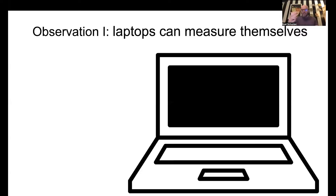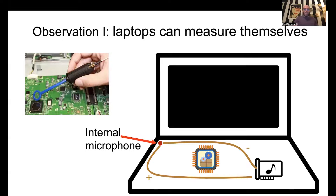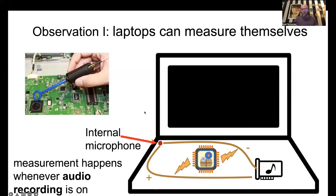We're going to do this by leveraging the fact that a laptop actually has everything needed to sort of measure itself. It has a microphone, and this microphone is connected internally to the sound card using wires that go very close to where the CPU is. This mirrors the picture of an actual physical side channel attack, and that's not a coincidence — maybe we can use emissions from the CPU and analyze what the sound card picks up from them.